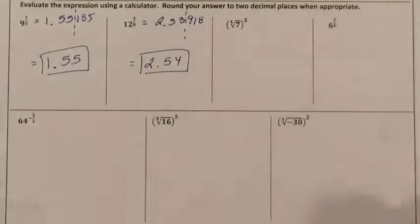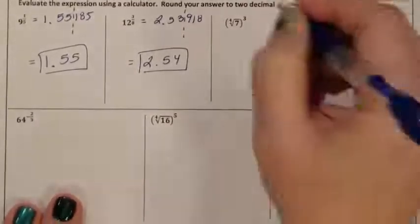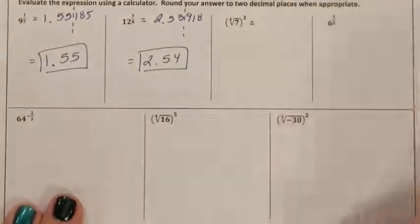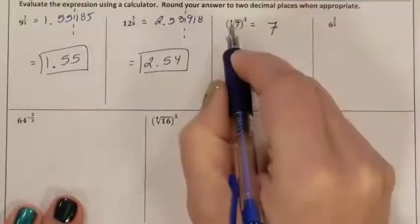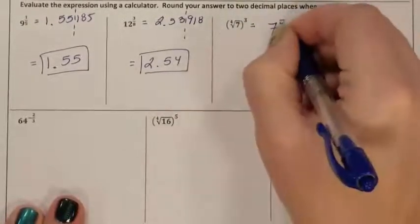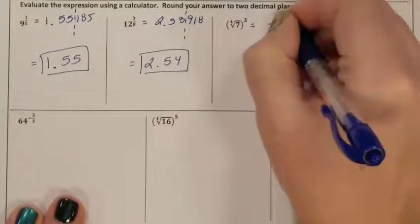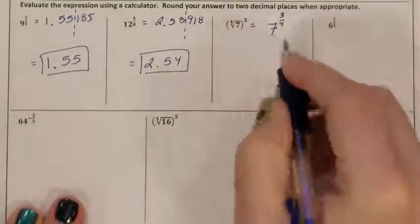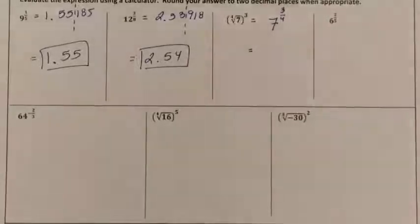The next problem. I need to rewrite this when it has an exponent instead. So the base was 7. The denominator of the fraction exponent was the root of 4, and the numerator was 3. This is what I'm going to type into my calculator to try and find my decimal answer.